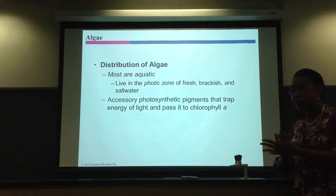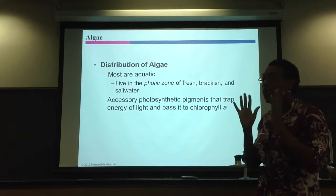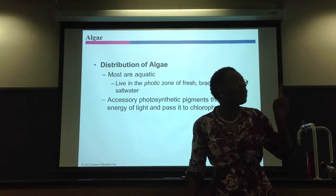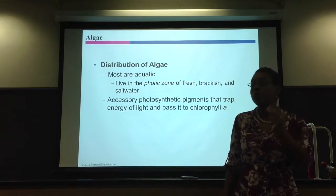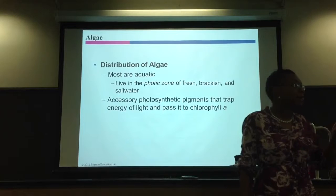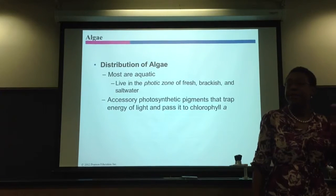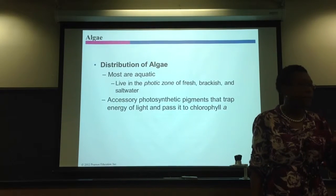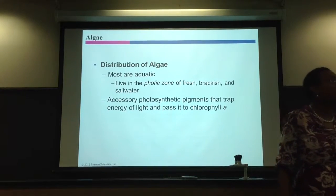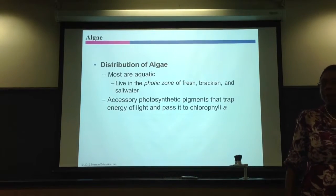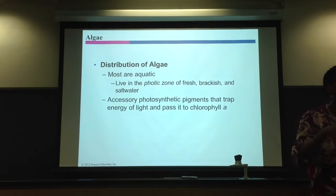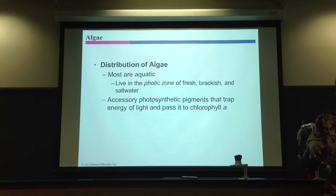We start with the protozoans first. Protozoans — what do you have to know? First, they're all unicellular. Second, they lack cell walls. There's only one exception: one protozoan has a cell wall, and it's the dinoflagellate.